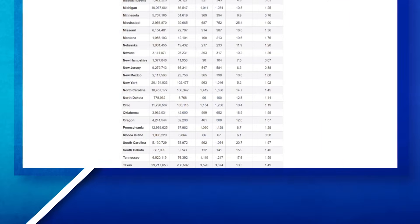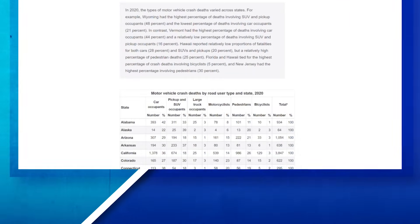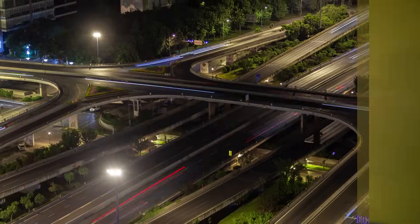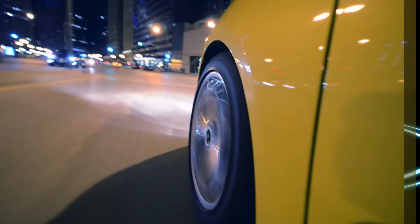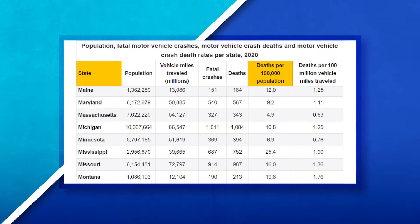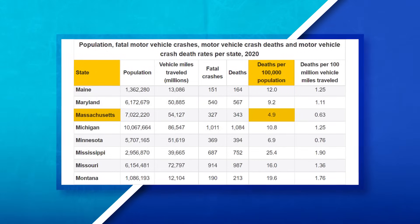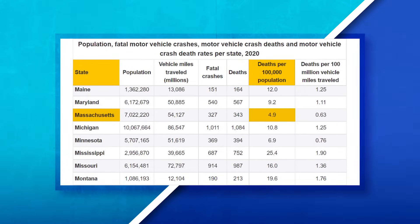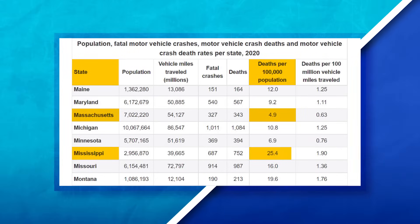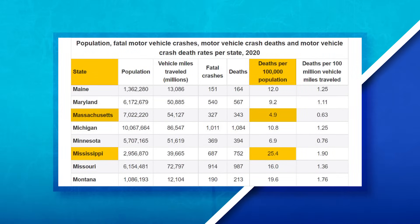Or perhaps a more regional approach would be better, and you decide to look at the amount of traffic-related deaths at the state level. Now you can look at how different states handle their roadways, what policies they have in place for motorists, and look at their regional safety standards. Or you could look for patterns or trends between states — such as Massachusetts, which had 4.9 deaths per 100,000 people, versus Mississippi, which had 25.4 deaths per 100,000 people.